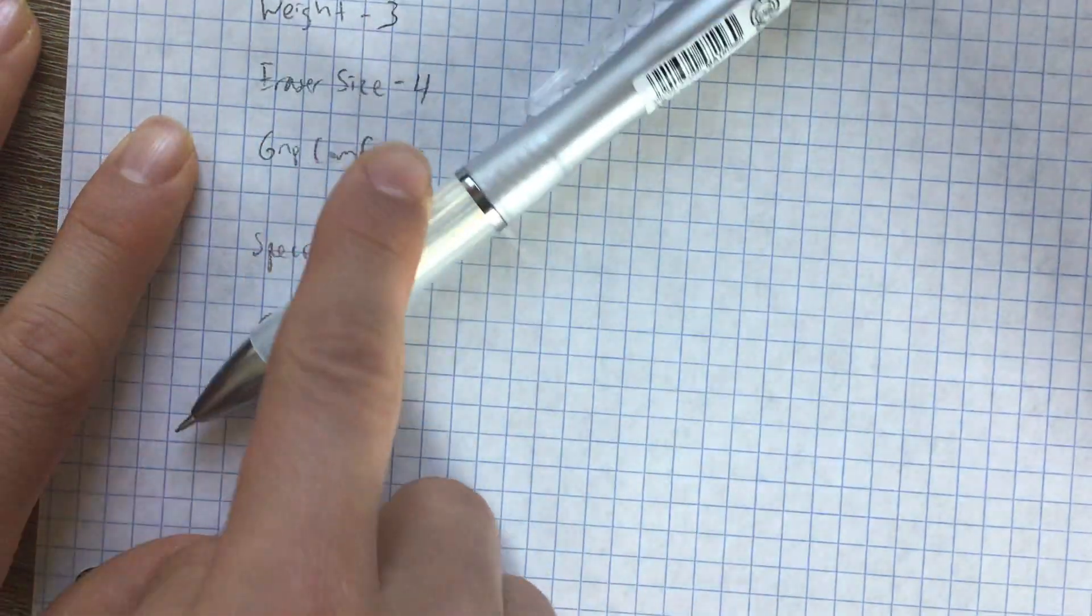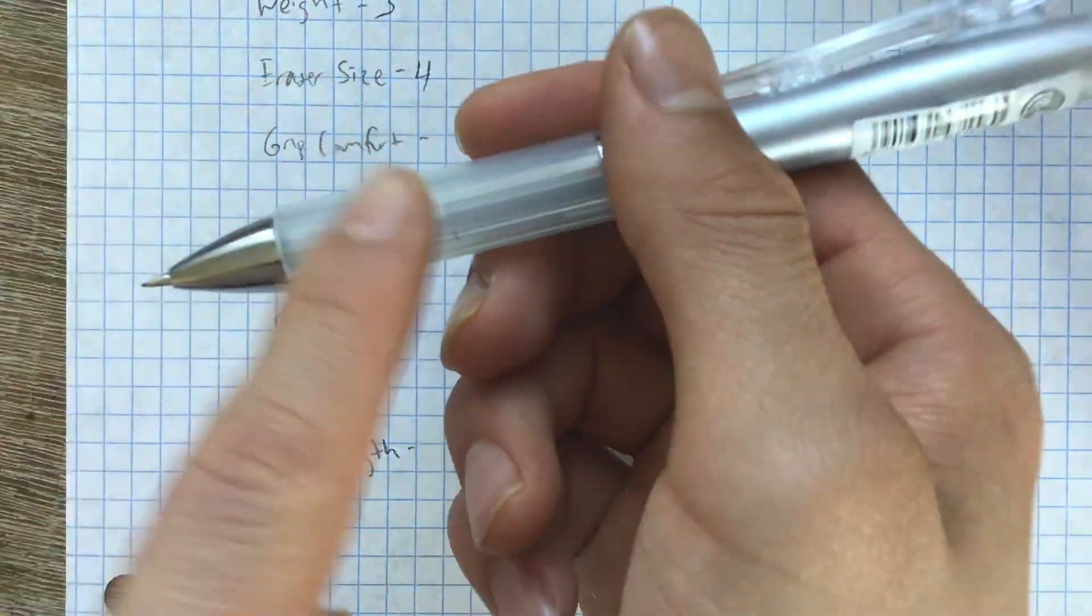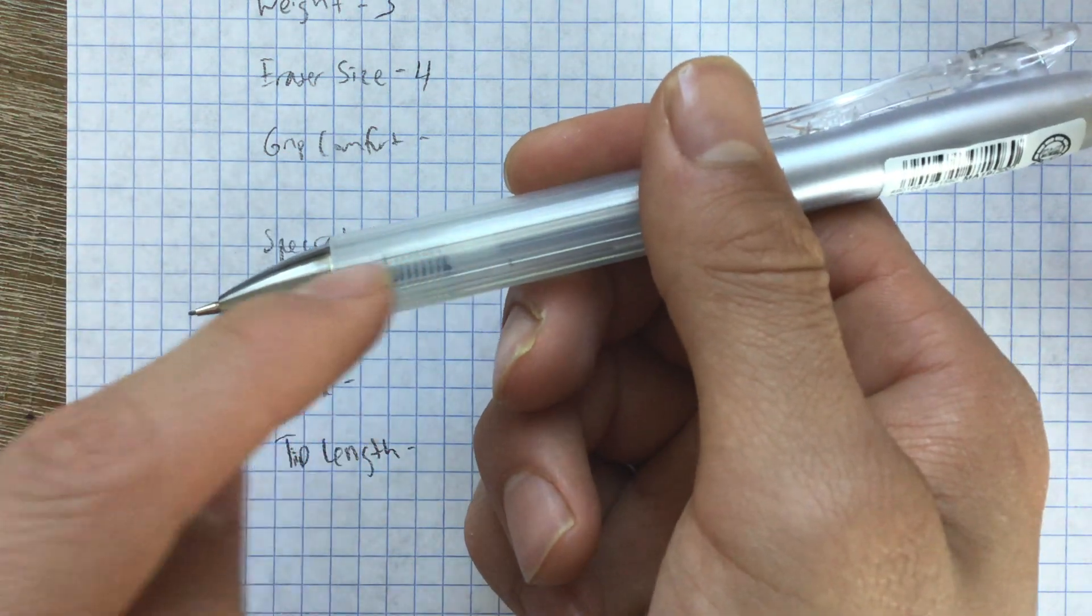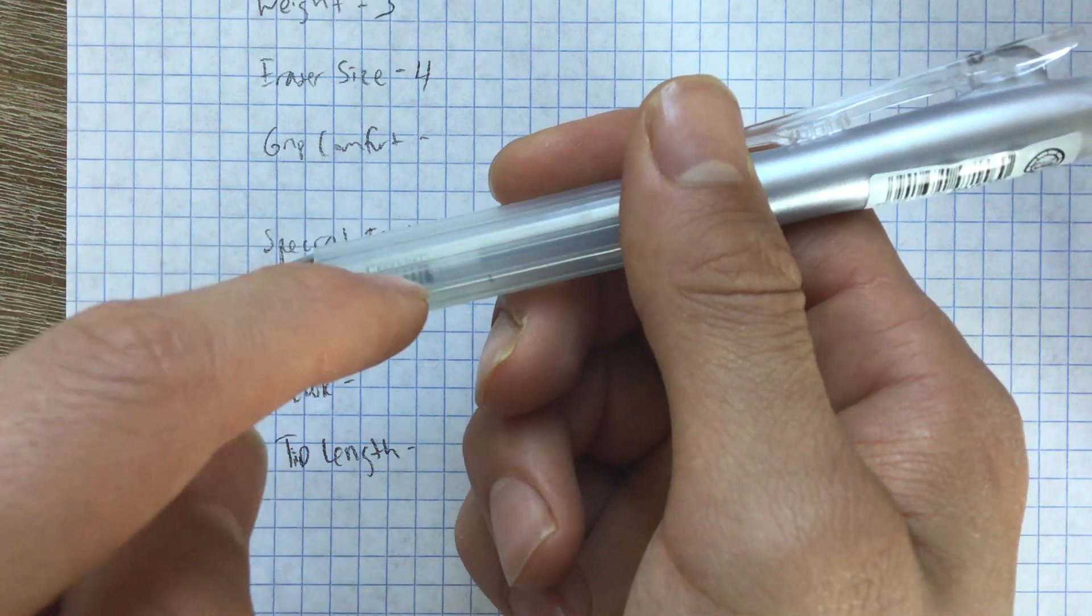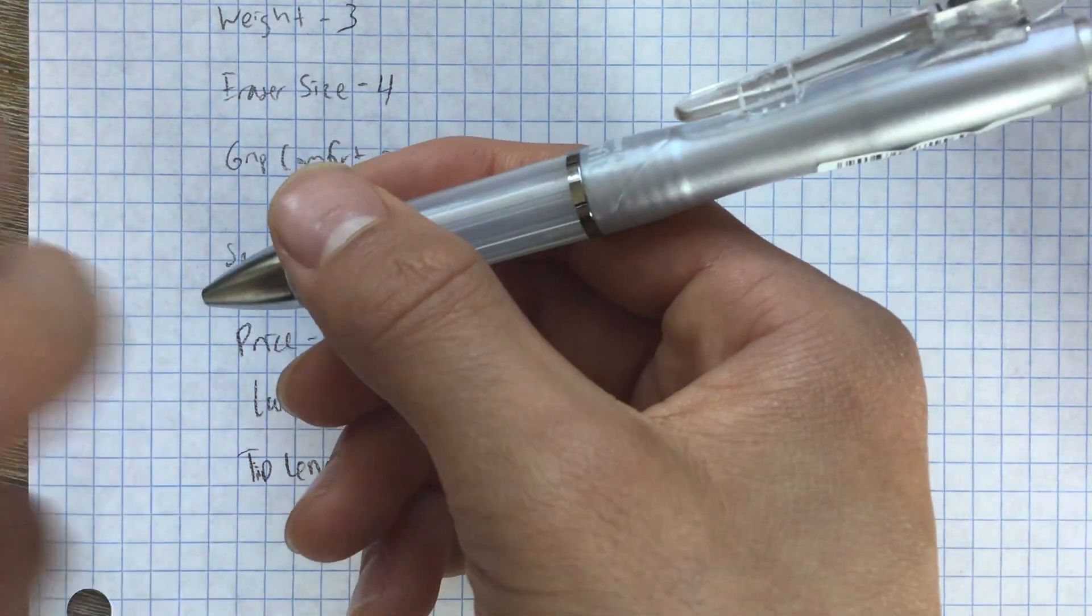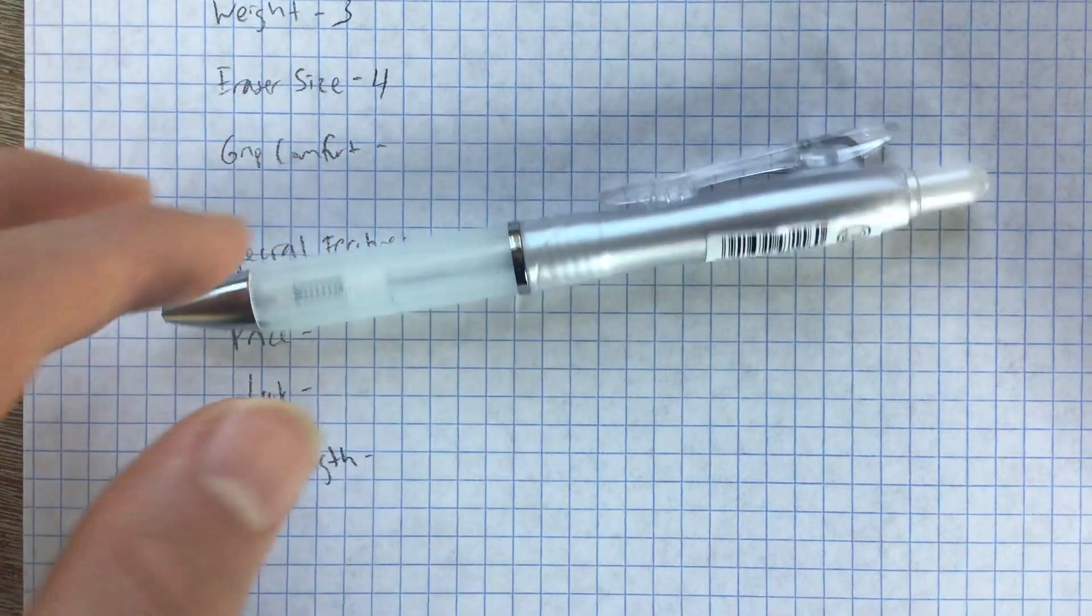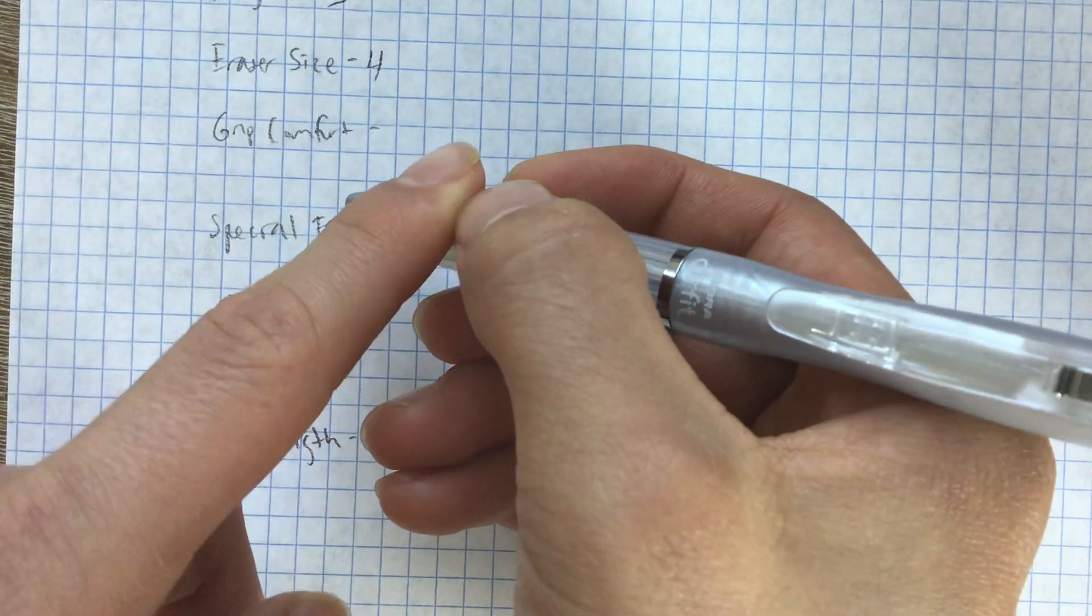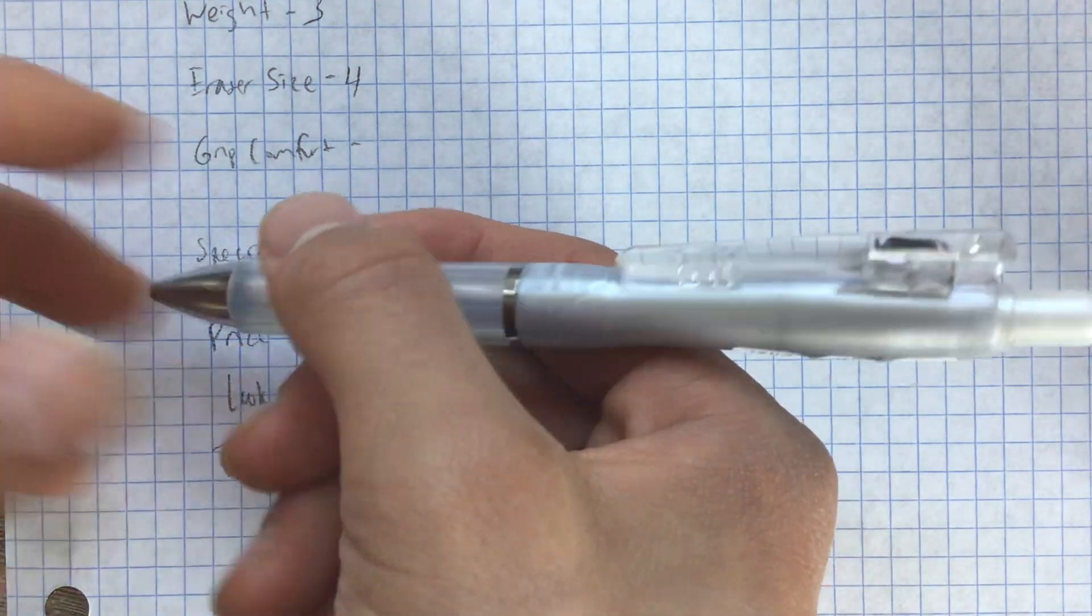Grip comfort. So the whole selling point on the Zebra AirFit is supposed to be that there's a hollow grip. This grip is made of plastic and then you can see the mechanism inside and there's a tiny air pocket between the grip itself and the inside mechanism of the pencil. So this is supposed to increase heat loss from your hands. So the whole marketing thing behind this pencil is that if you have sweaty hands when you're taking tests or something this will help to cool down your hands. Now I thought this was a unique cool idea and that's the reason I bought this pencil.